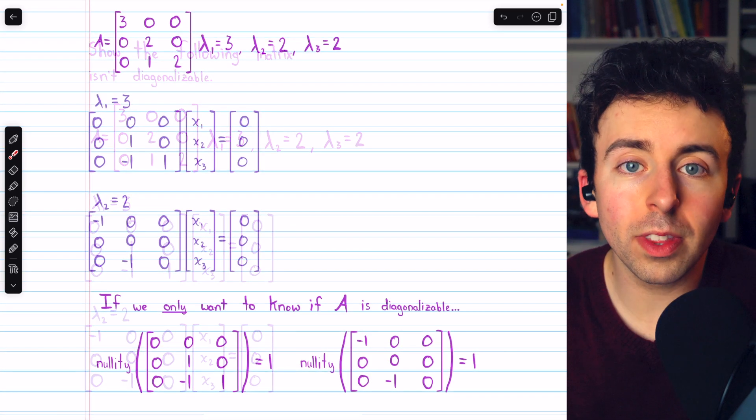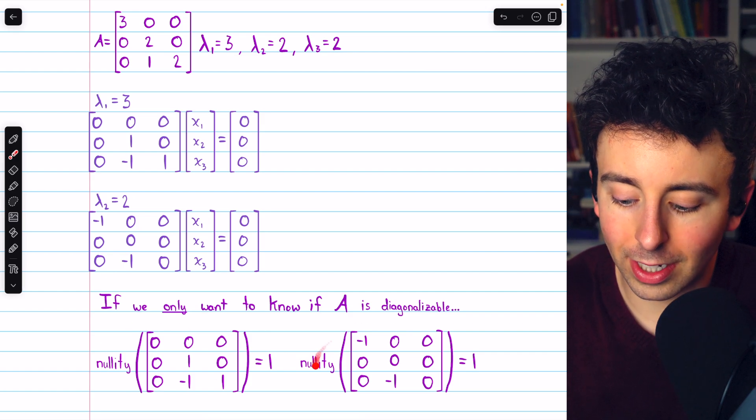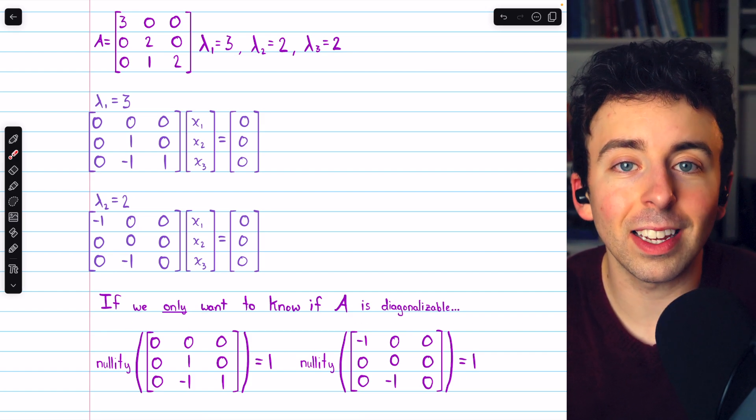Hence, it's not diagonalizable. So this method works - just considering the nullity is sufficient to show that this matrix isn't diagonalizable.